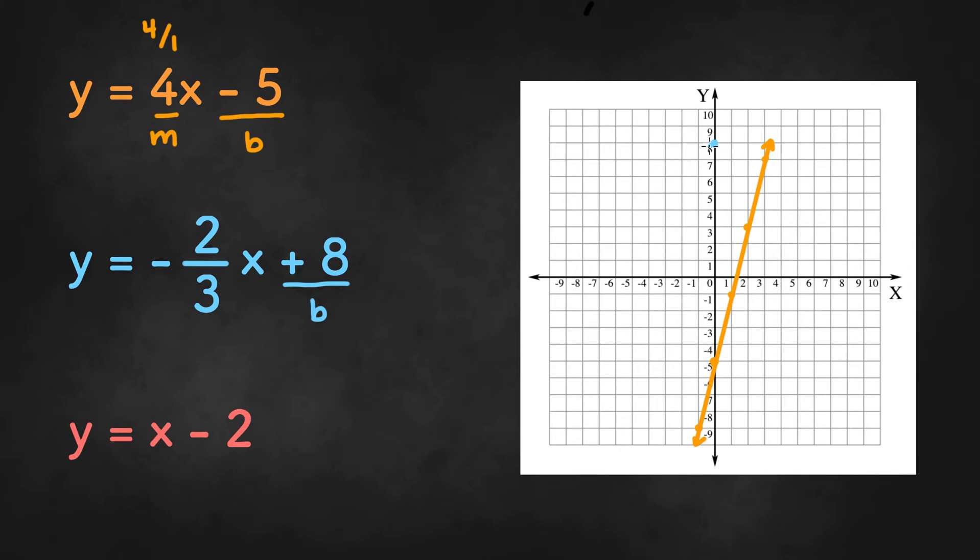So the 8 goes right there and then we're going to move on to the slope and we have a negative slope of 2/3. So what this means is we're going to go down 2 and right 3 or up 2 and left 3.